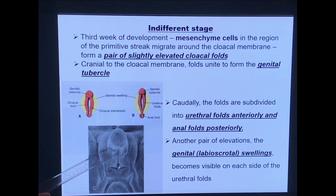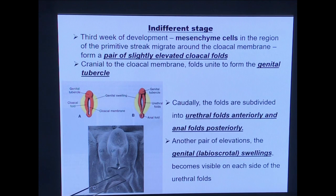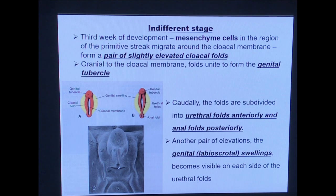In this picture, GT represents the genital tubercle — the fusion of urethral folds at the cranial aspect. You can see the urethral folds, the anal fold surrounding the anal orifice, and the labioscrotal swelling or genital swelling on either side. This is the indifferent stage where the fetus cannot be morphologically distinguished as male or female.